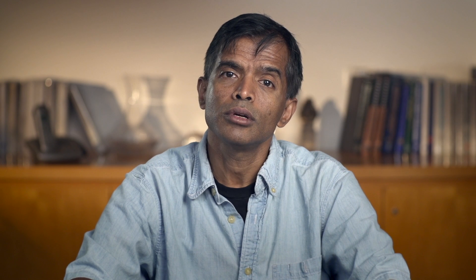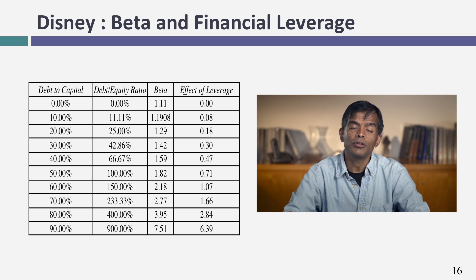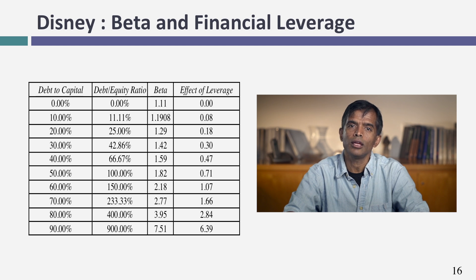If I have the unlevered beta, I can tell you what the beta for Disney will be at any debt-to-equity ratio. In this table, I've computed the beta for Disney at every D/E ratio from 0% to 900%. At 0%, the levered beta equals the unlevered beta because there's no debt. As the debt-to-equity ratio increases, look at how high the beta becomes. You can take any company and move its beta to levels you haven't seen before — 5, 6, 7 — if you borrow enough money. That's something to think about the next time you see a leveraged buyout where acquirers take on 80–90% of overall capital in debt: the effect on beta is going to be high and the cost of equity is going to go up.